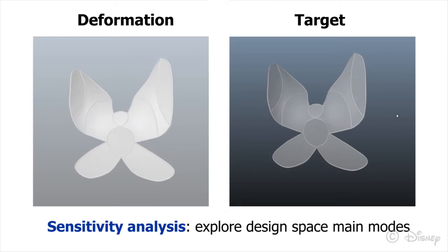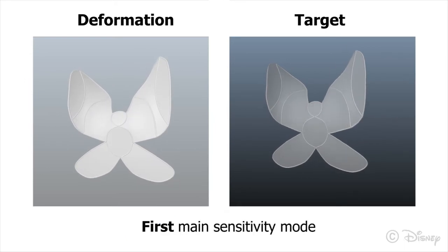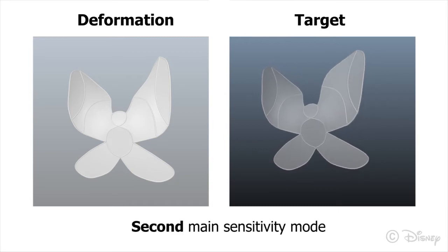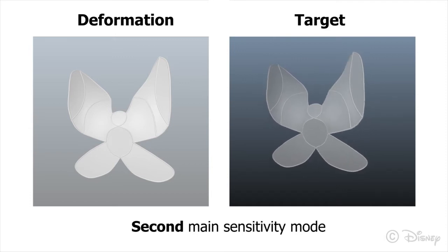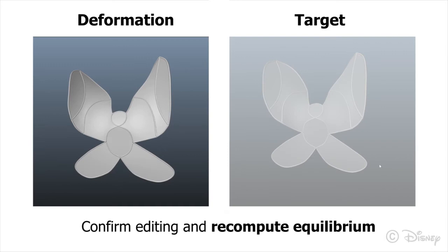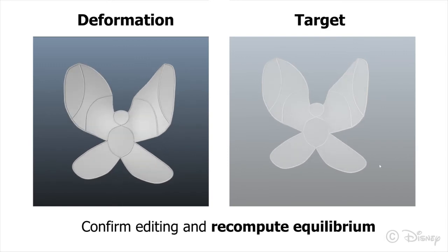Sensitivity exploration: Our design tool also provides an intuitive way of visualizing and exploring the design space. To this end, we compute the singular value decomposition of the linearized sensitivity matrix. The user can preview the change in shape corresponding to the dominant modes of the sensitivity matrix. Once an edit is selected, the resulting equilibrium shape is recomputed interactively.